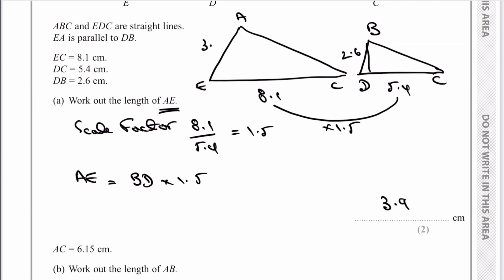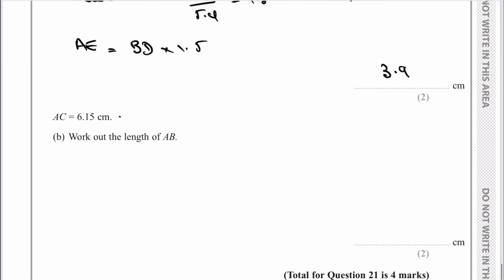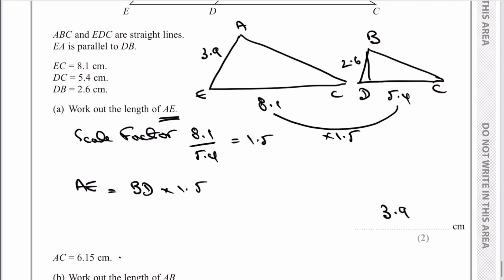Finally, it says AC is 6.15 centimeters, work out length of AB. What I'm going to do is work out the length of BC and then take one away from the other. This is 6.15, and I'm going to work out BC, then to get AB, which is this bit of the drawing, I need to take one away from the other.